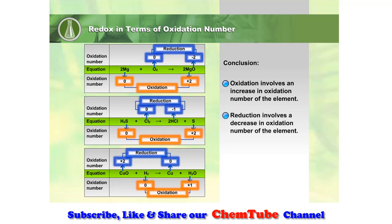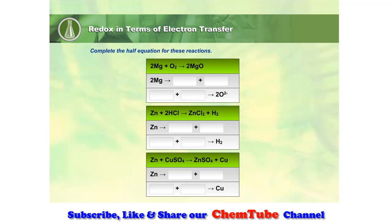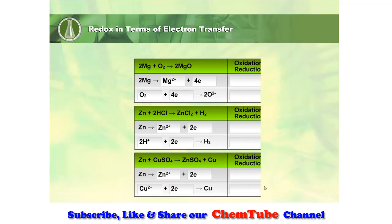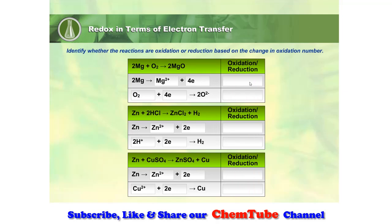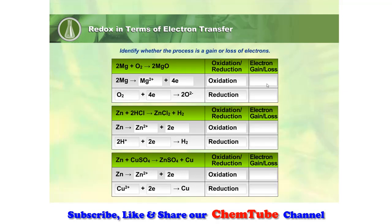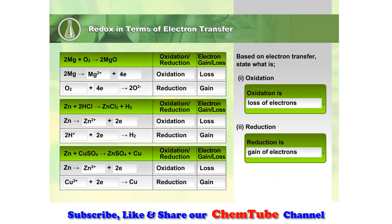Reduction involves a decrease in oxidation number. Complete the half equation for these reactions. Identify whether the reactions are oxidation or reduction based on the change in oxidation number. Identify whether the process is a gain or loss of electrons. Oxidation is loss of electrons and reduction is gain of electrons. This is the basis of the modern definition of oxidation and reduction.